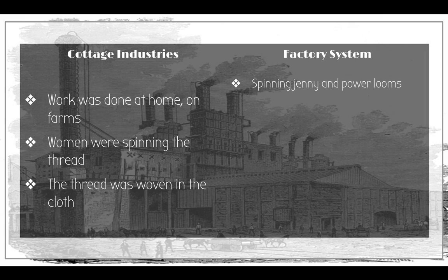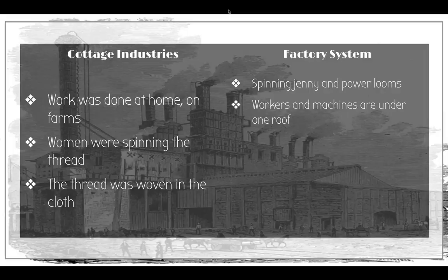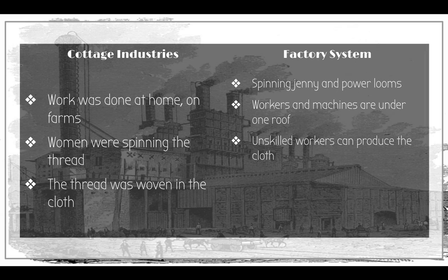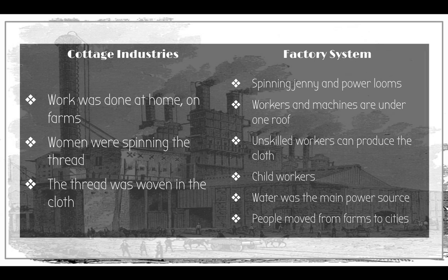Now we're moving into the factory system. We have large machines — a spinning Jenny and a power loom — which allowed more than just one woman working on one piece of cloth at a time. She could utilize multiple strands of thread to make a larger piece of cloth. Unskilled workers could do this since the machines were easy to operate. You didn't have to be educated to work them. This encouraged people to move from their farms into the city, which is going to lead to the growth of cities — no longer isolated on a farm, but living right next to neighbors.